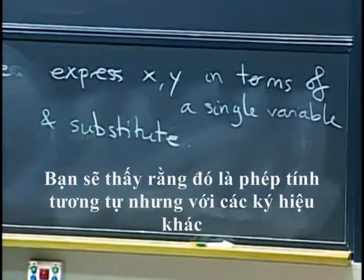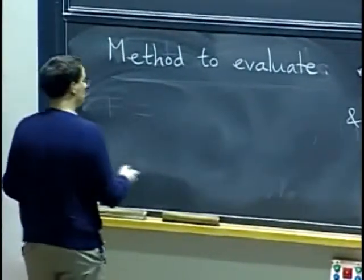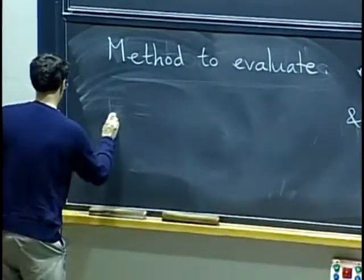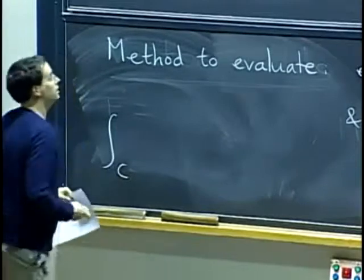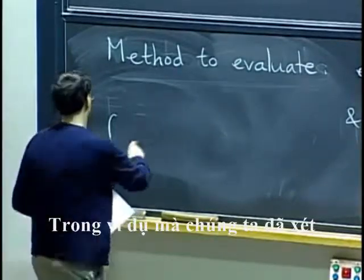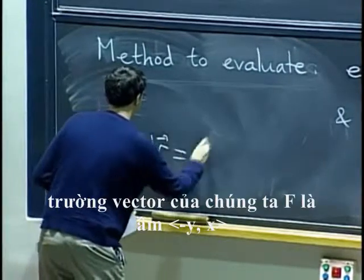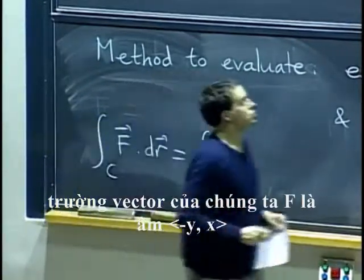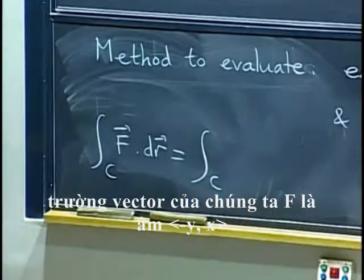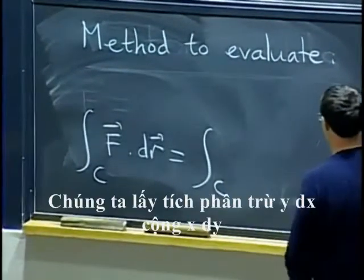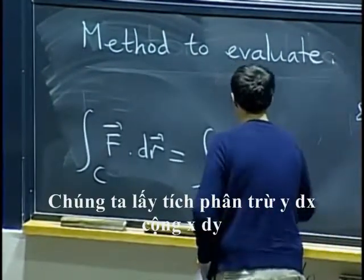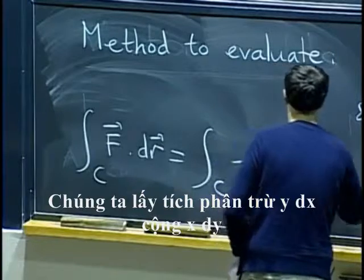You'll see it's the same calculation but with different notations. So in that example that we had, our vector field f was negative y, x. So what we are integrating is negative y dx plus x dy.